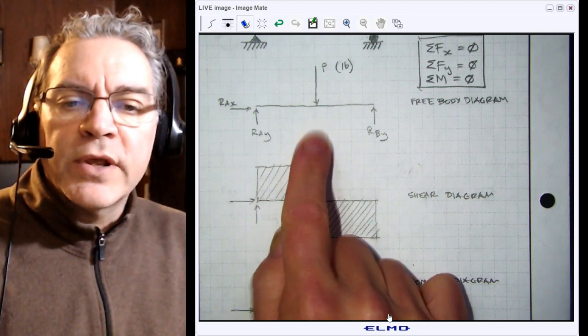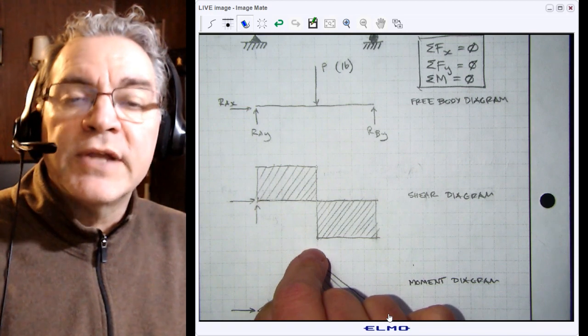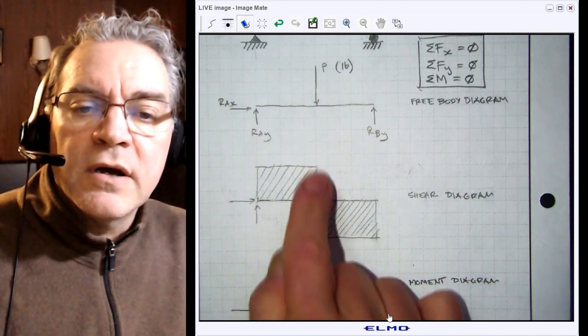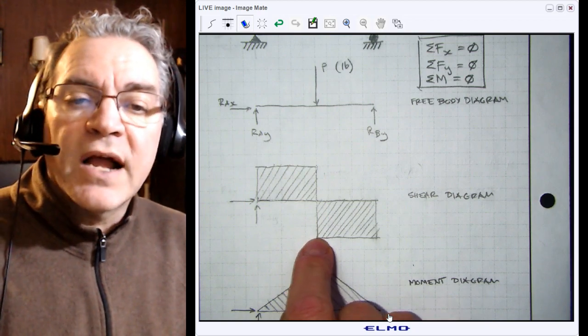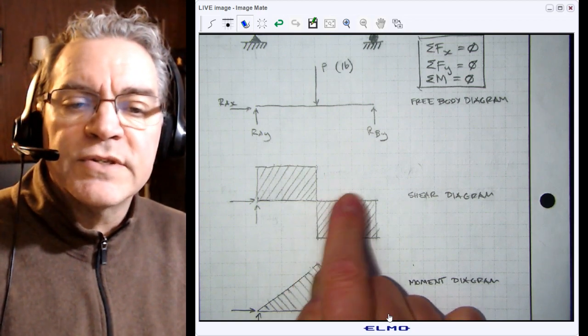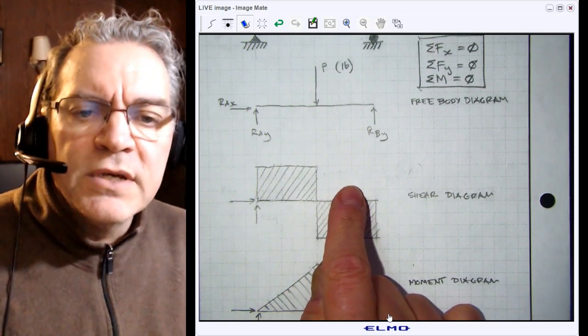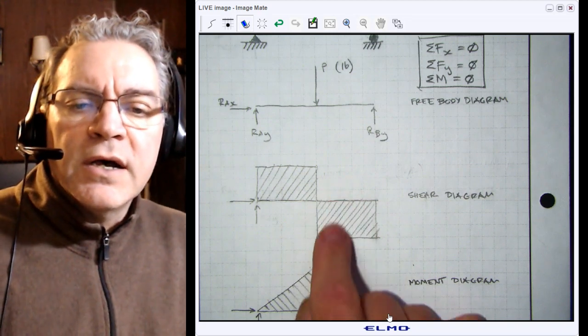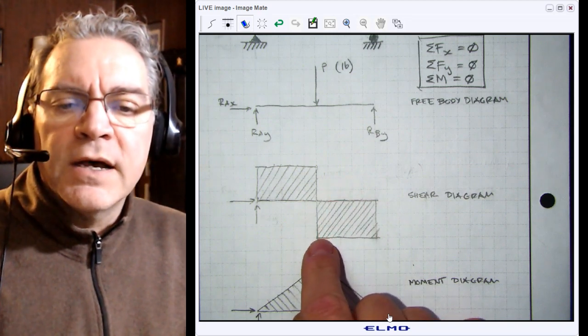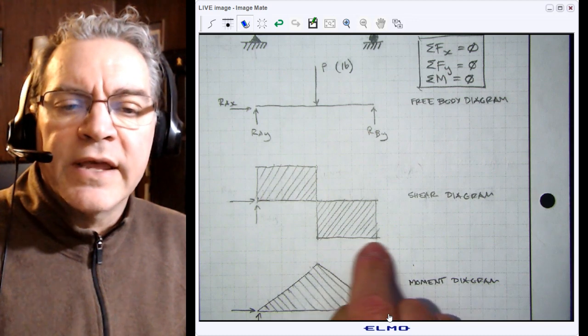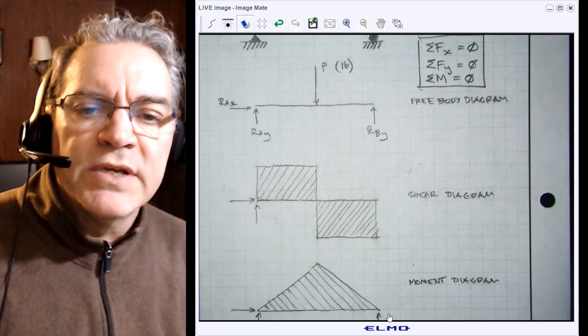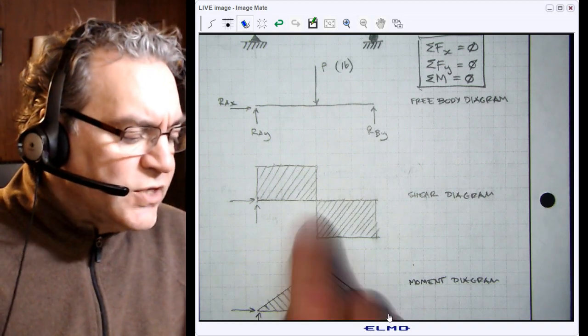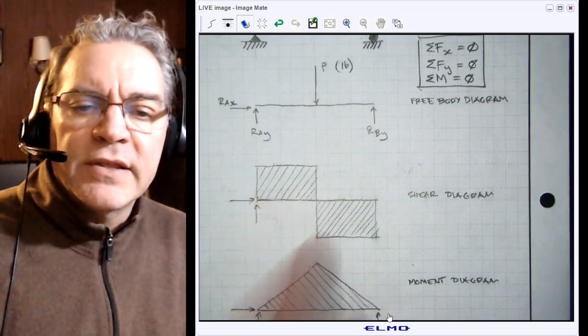Now we have another point load and the shear diagram changes instantaneously from positive to negative. It remains constant again because there are no external forces applied to the beam from here all the way until the end. You can think of the shear diagram as representing the internal shear force inside the beam.